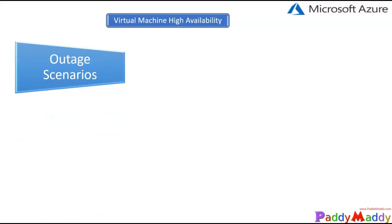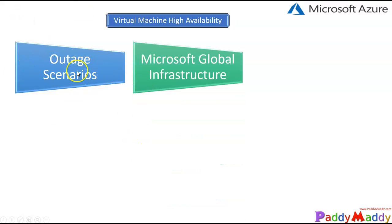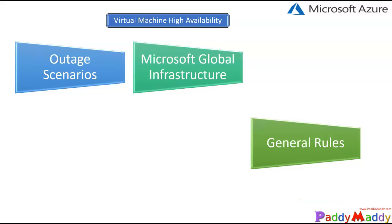Before we jump into high availability options, I wanted to focus on three key things. The first one is where we are going to use these outage scenarios and how best we can go for high availability management. There are also differences within the outage scenarios which we are going to discuss. The second one, we are going to look at how Microsoft is offering a highly available global infrastructure for virtual machines. And finally, some general principles and rules which we are going to discuss.